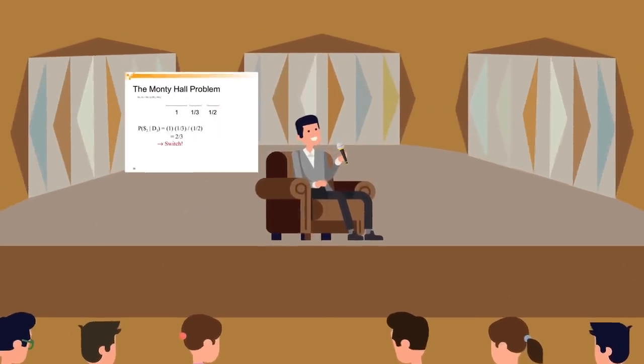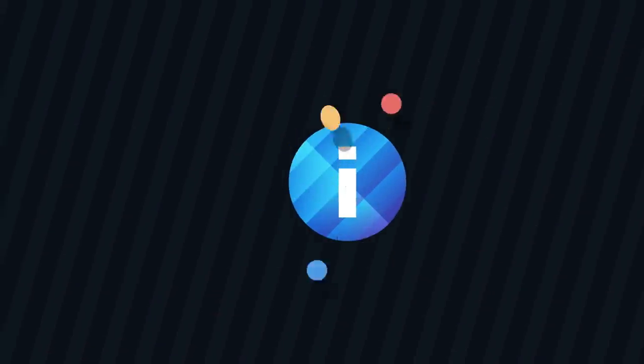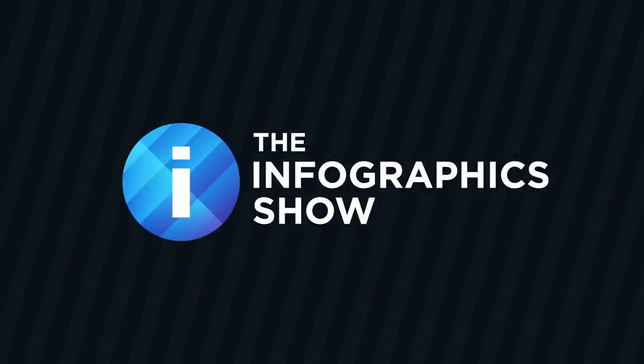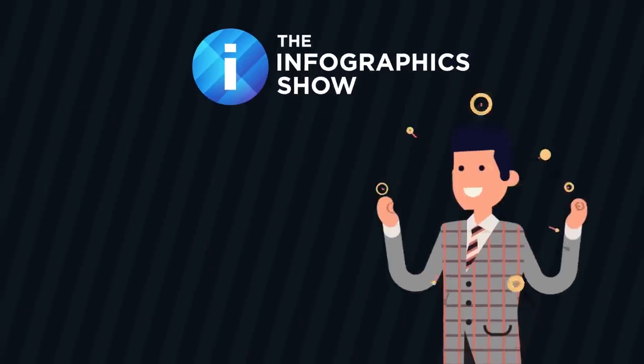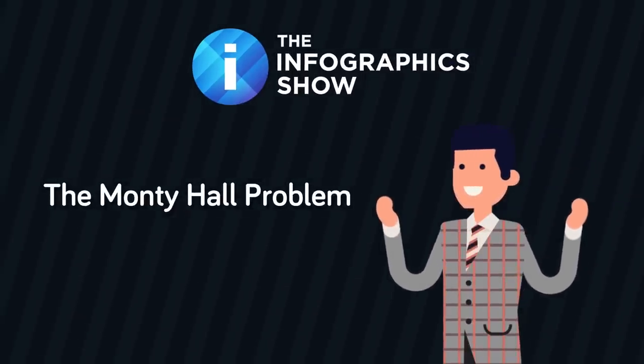Who would have known that decades after the show premiered, a probability puzzle loosely based on it would stir up so much controversy in academic and intellectual circles? We will examine this intriguing puzzle today in this episode of the Infographic Show: The Monty Hall Problem.